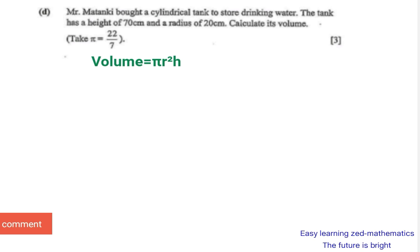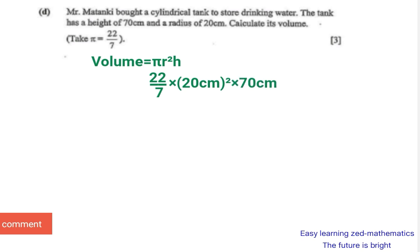Next, replace the letters with their values. Pi is 22 over 7, the radius is 20 centimetres, so we have 22/7 multiplied by 20 centimetres squared, multiplied by the height of 70 centimetres.